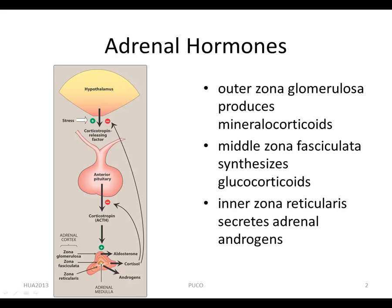The adrenal cortex is divided into three zones that synthesize various steroids from cholesterol and then secrete them. The outer zone, glomerulosa, produces mineralocorticoids — for example, aldosterone — which are responsible for regulating salt and water metabolism.